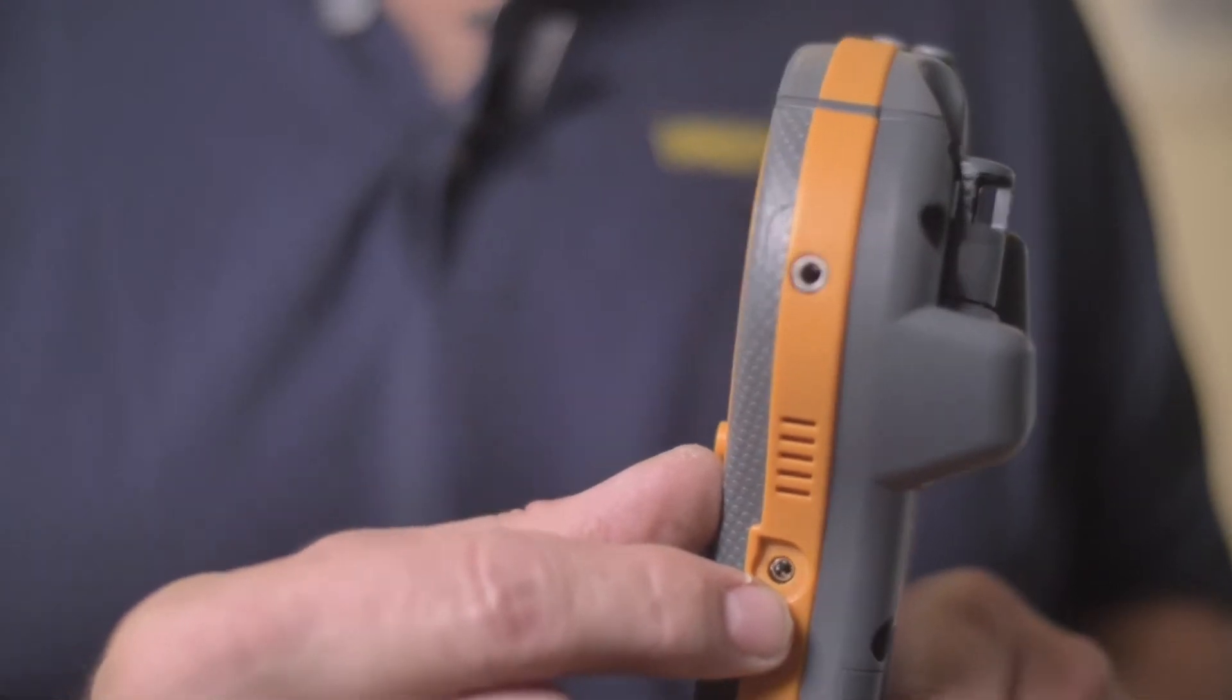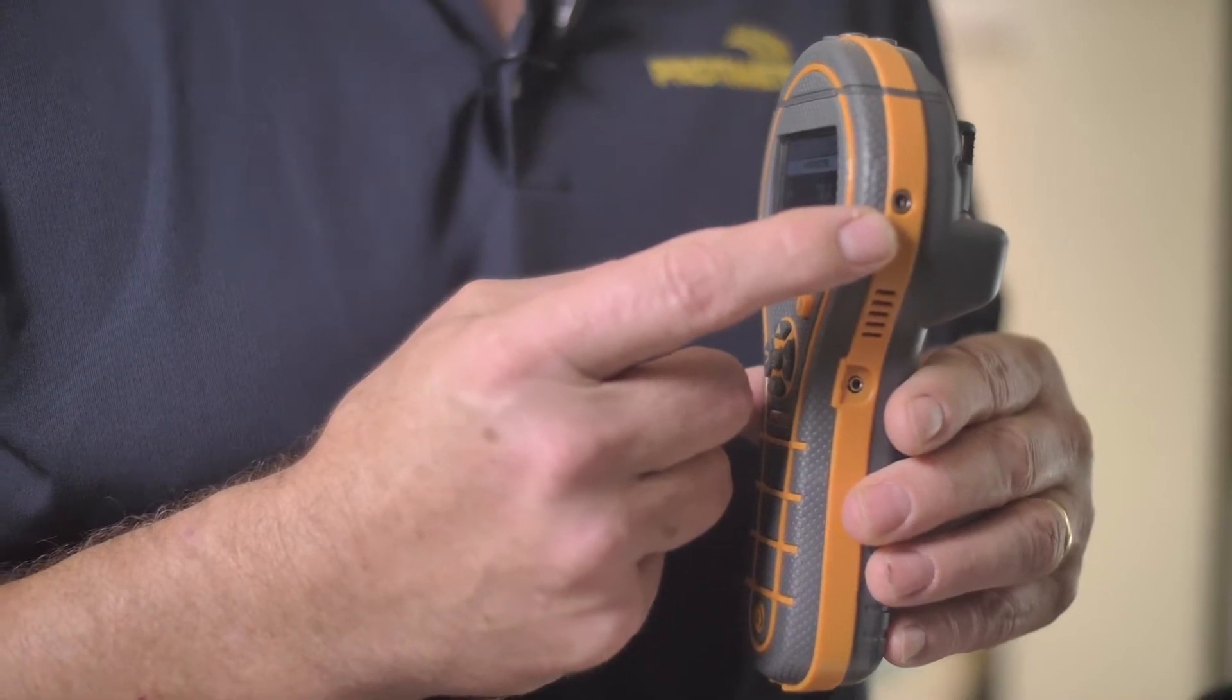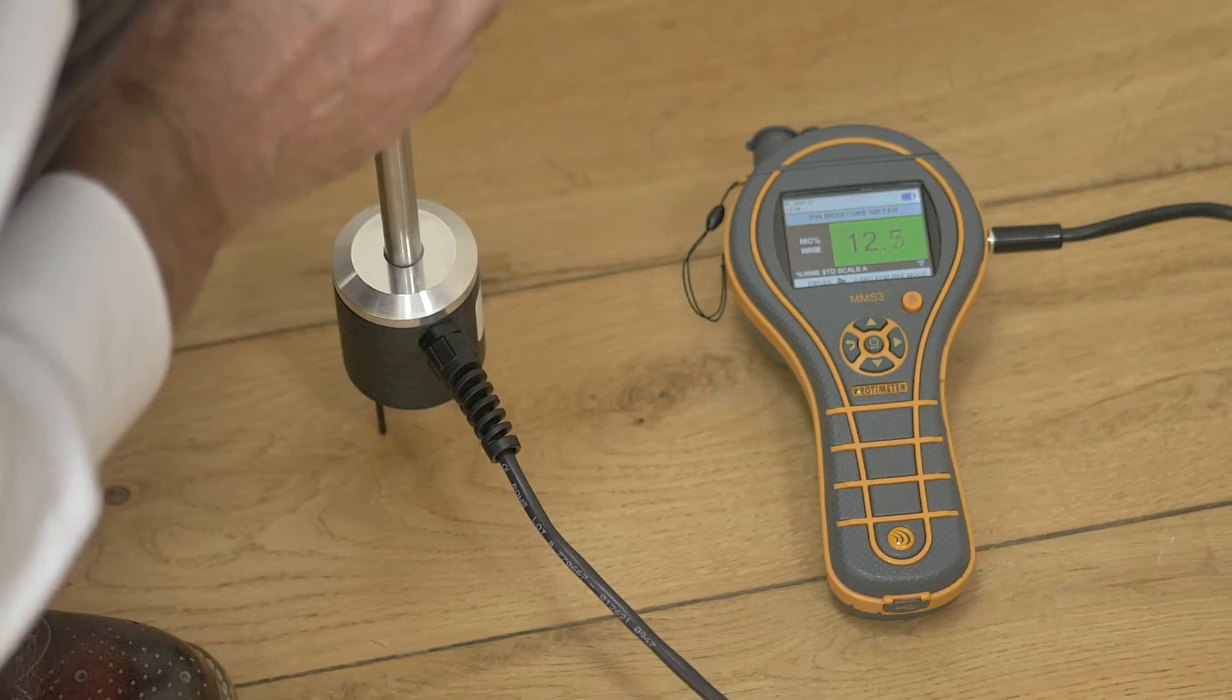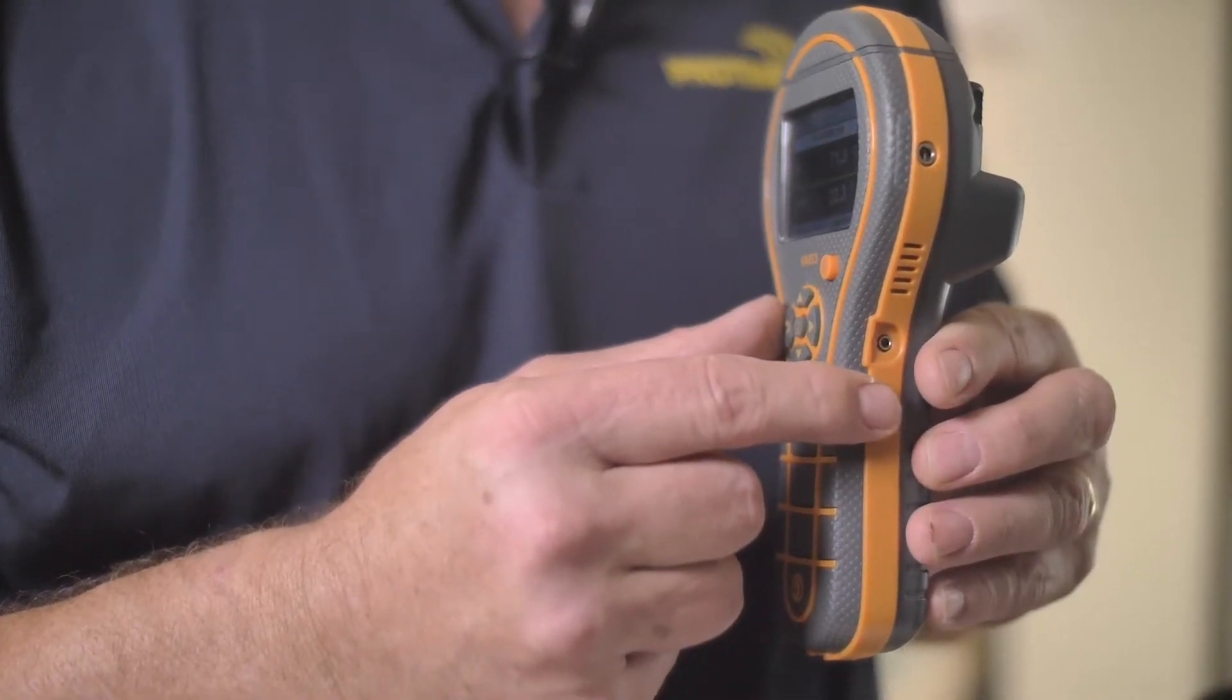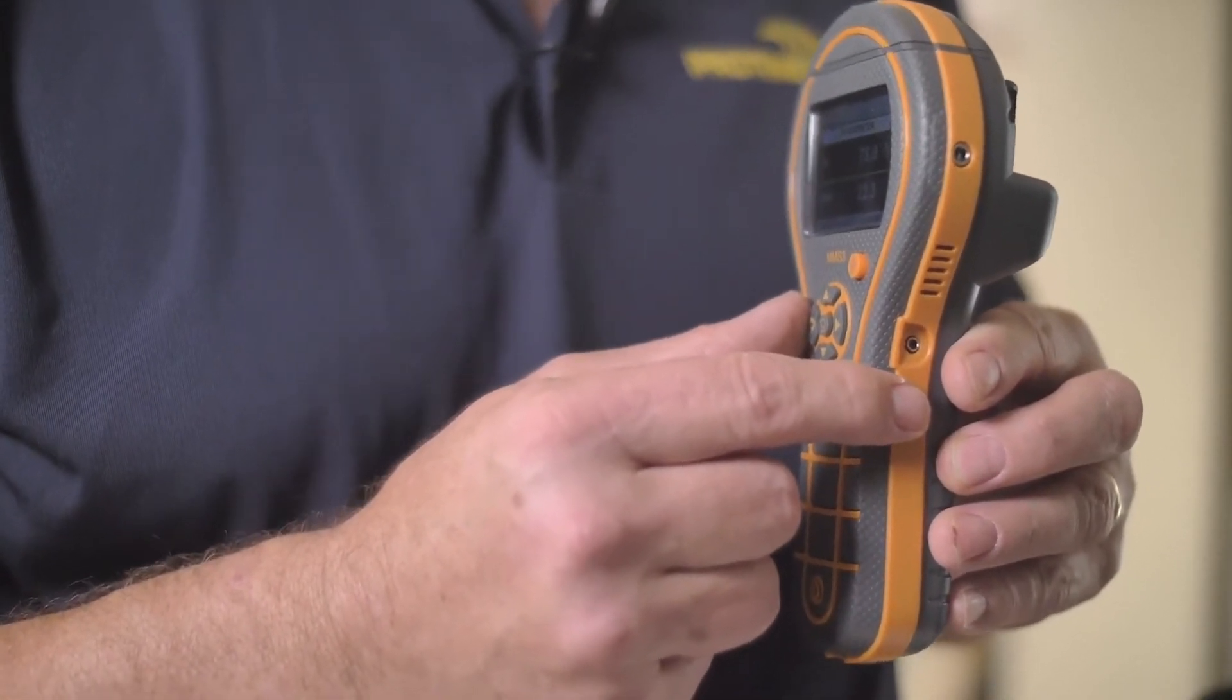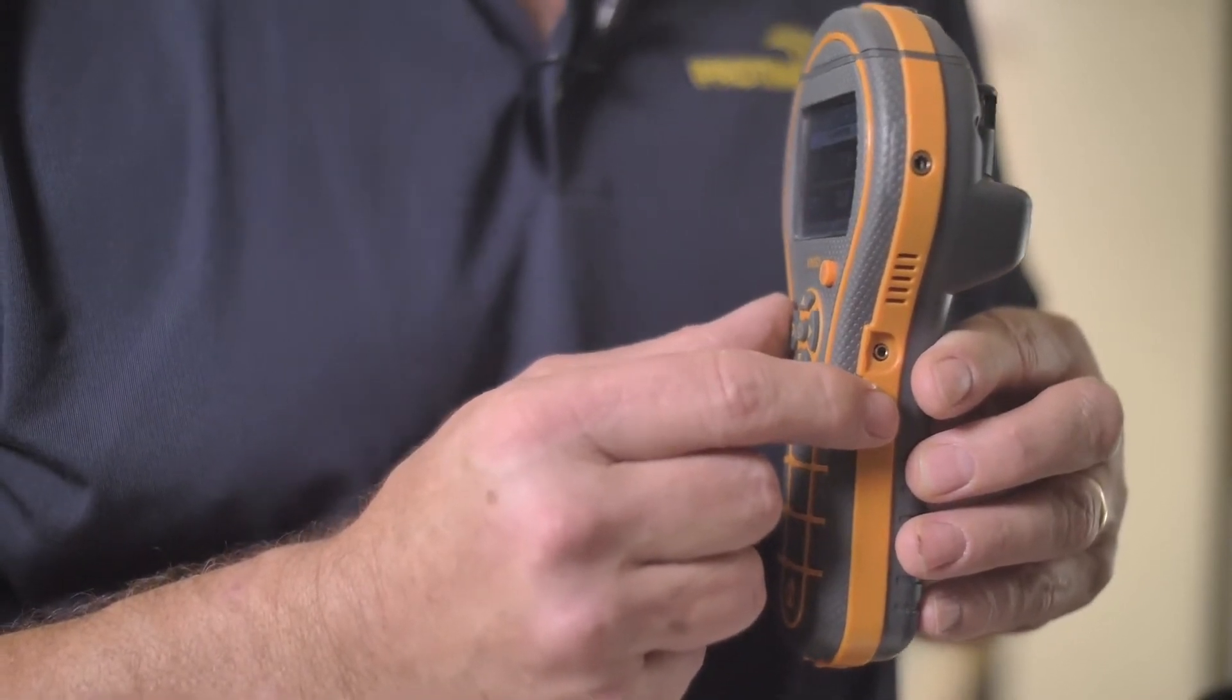On the side of the meter here, you'll notice two ports. One port here for adding accessories such as deep wall probes, baseboard probes, and hammer electrodes. The second port here allows you to do more precise surface temperature measurement. We'll talk more about surface temperature measurement later when we look at a condensation situation.